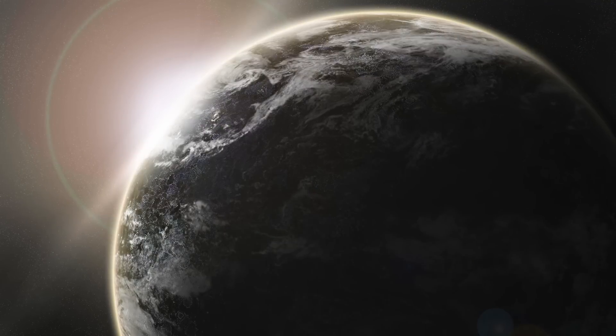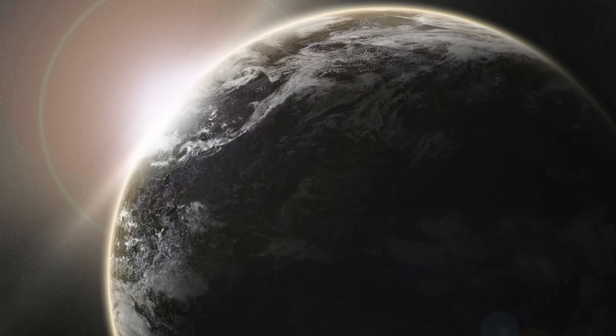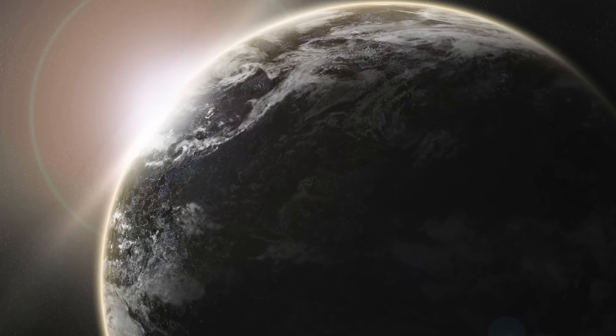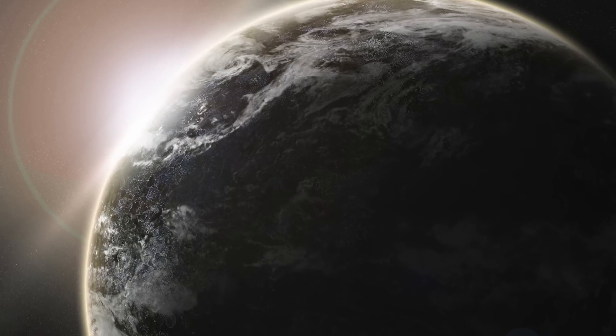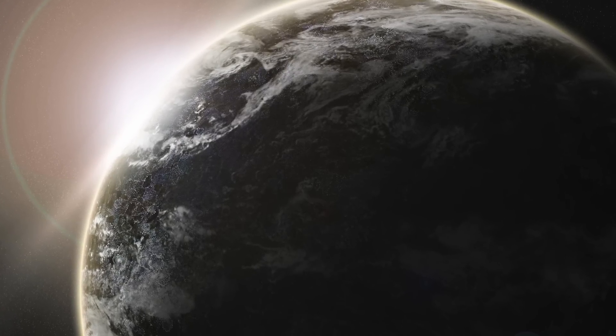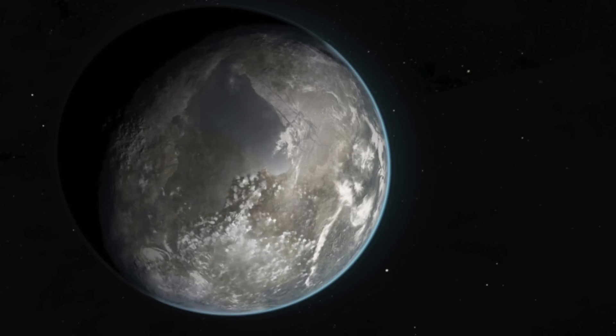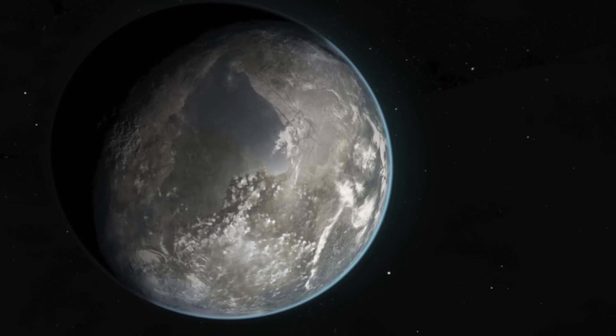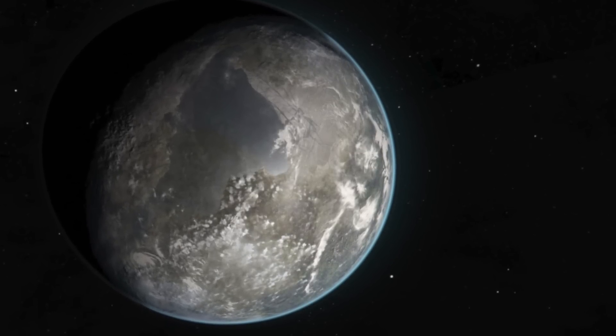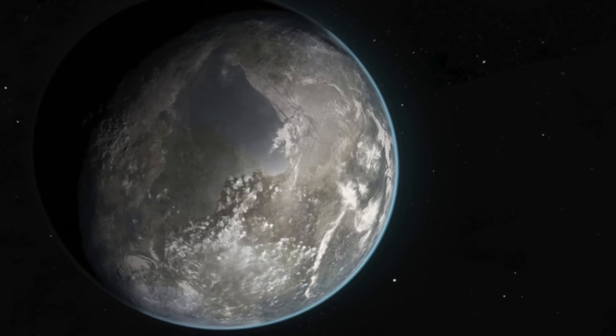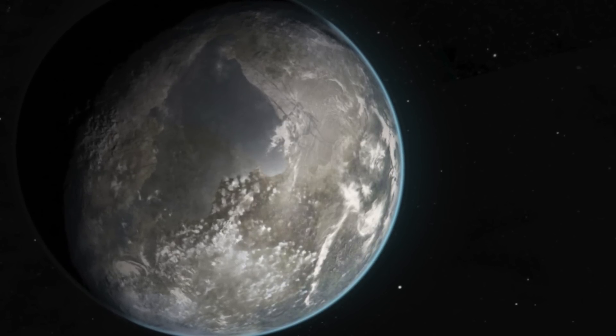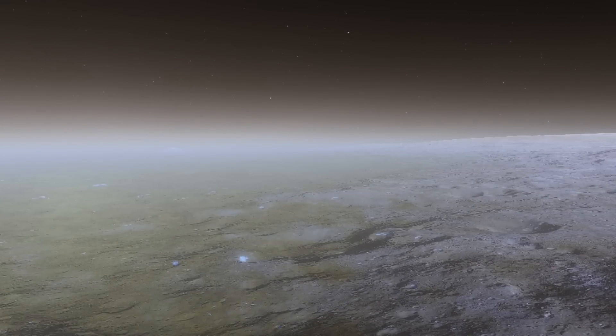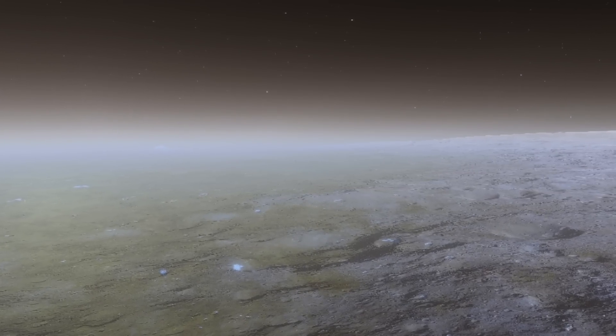Although extraterrestrial life has not yet been discovered, there have been several examples of locations that appear extremely hospitable for life, and Kepler 62e is among this number. An exoplanet orbiting approximately 1200 light-years from Earth, Kepler 62e is a waterworld that appears to be a similar size to Earth and orbits in what is known as the habitable region of its star, making it an excellent candidate for conditions favorable for life.